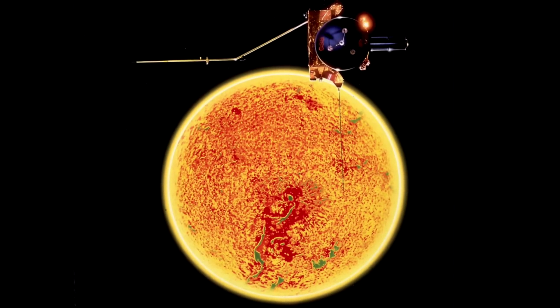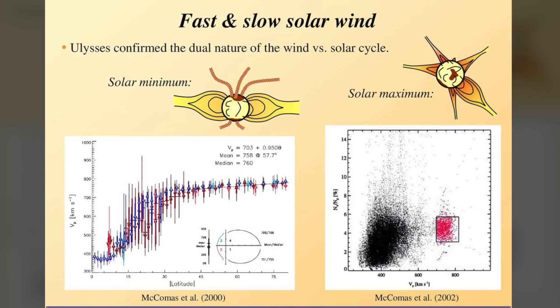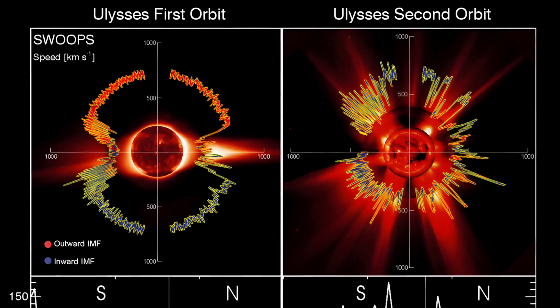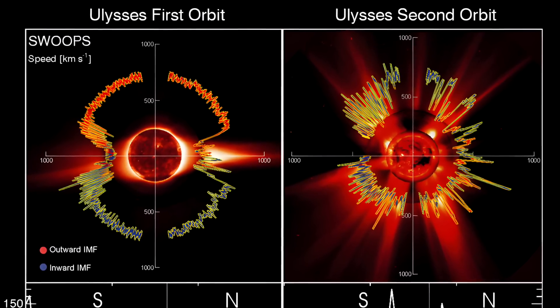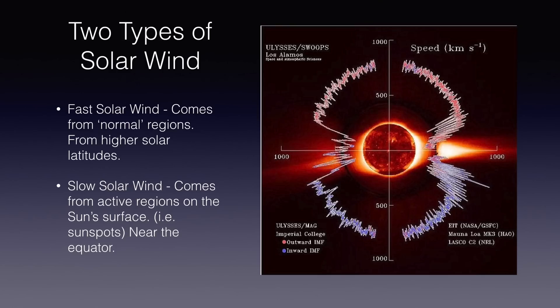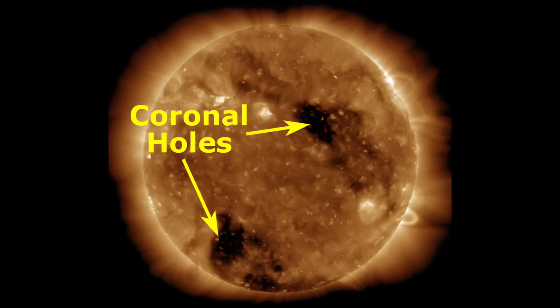Later, the Ulysses solar probe discovered that this wind came in two varieties: an irregular, relatively slow type of flow with speeds up to 400 kilometers per second, and a fast one with speeds up to twice that, 800 kilometers per second. The slow one typically comes from the sun's equatorially located so-called streamer belt. The fast type comes from the relatively peaceful surface that we see when we look down through coronal holes at the normal surface of the smooth photosphere.